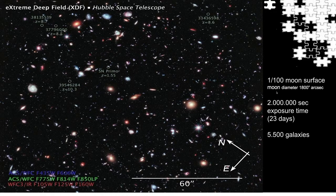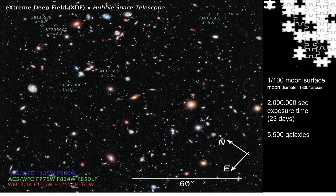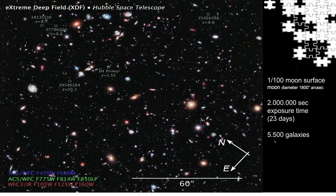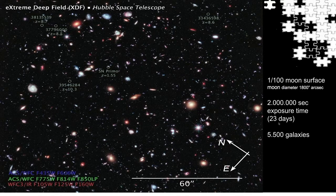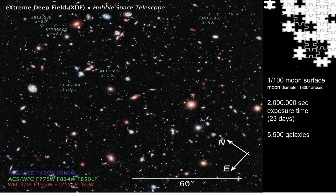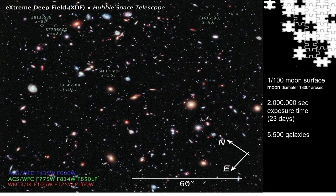This Hubble ultra-deep-field image is taken by an upgraded Hubble Space Telescope. This image shows about five and a half thousand proto-galaxies in the southern sky in the constellation Fornax. It took two million seconds exposure time, that is 23 days, to see the farthest and the earliest visible objects.